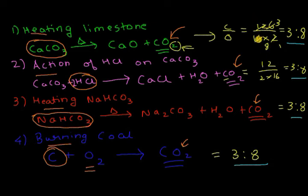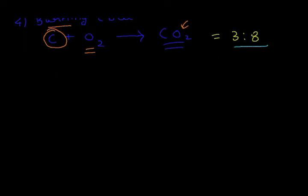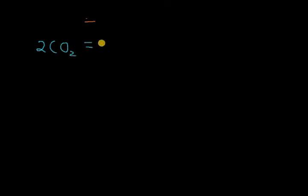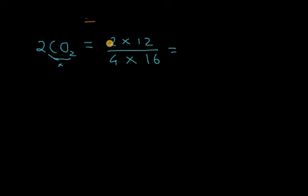Remember, we are using atomic mass and not atomic number. Even if there are 2 molecules of CO2 instead of 1, the ratio remains the same: 2 × 12 to 2 × 32 simplifies to 24:64, which is again 3:8. So the ratio of 3:8 holds regardless of the quantity of carbon dioxide considered.